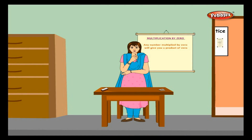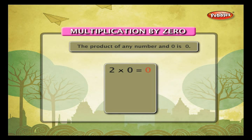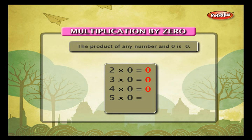Multiplication by 0. Any number multiplied by 0 will give you a product of 0. For example, 2 into 0 is 0, 3 into 0 is equal to 0, 4 into 0 is equal to 0, 5 into 0 is equal to 0, 6 into 0 is equal to 0, and so on.